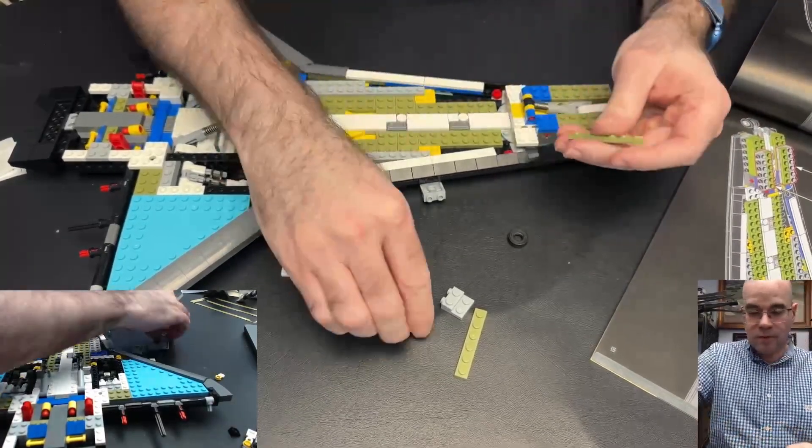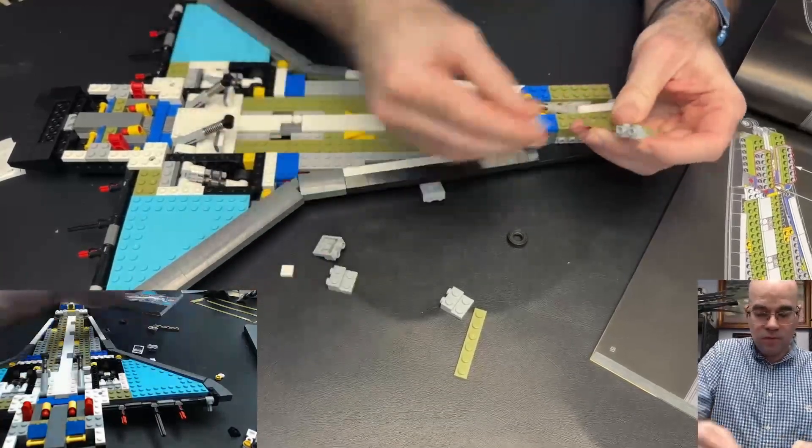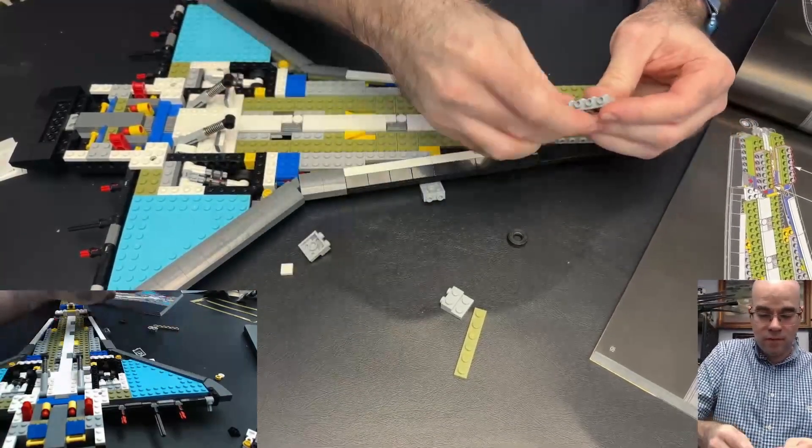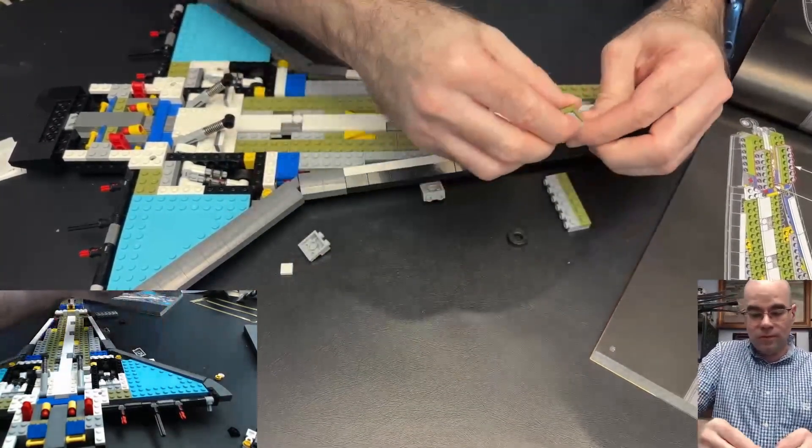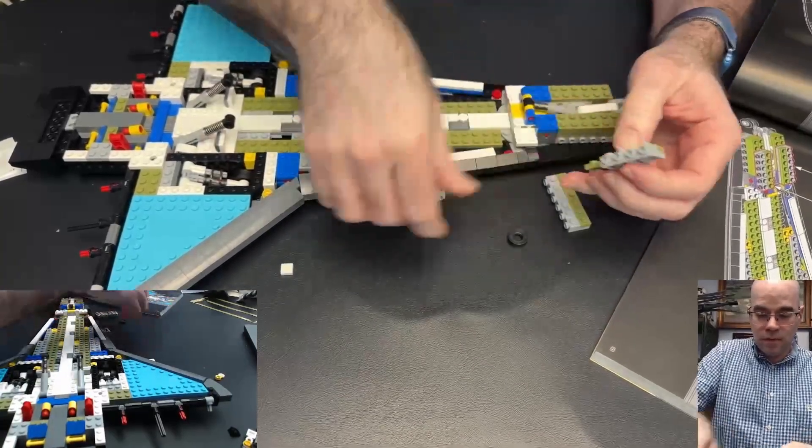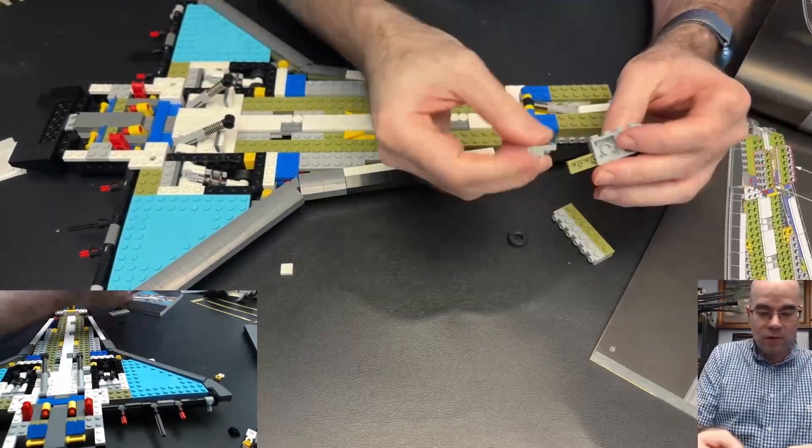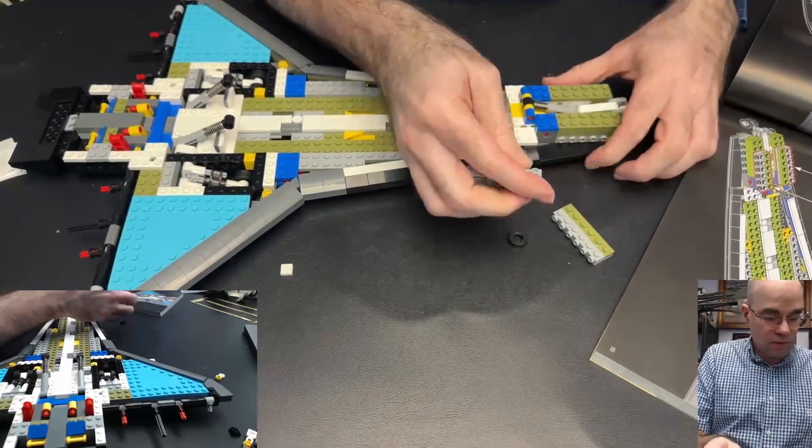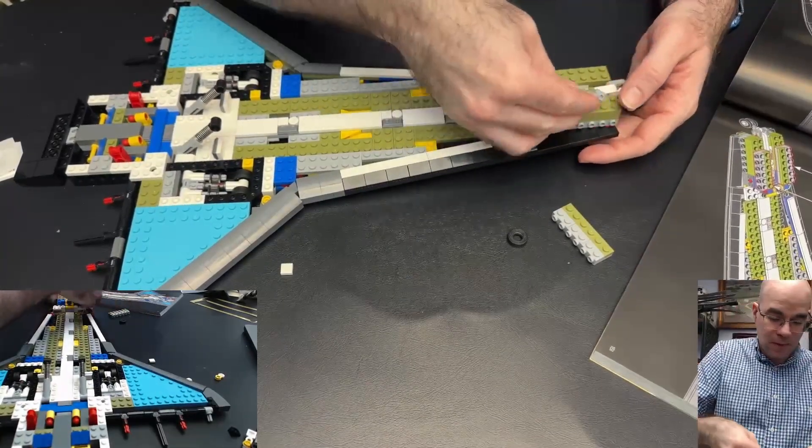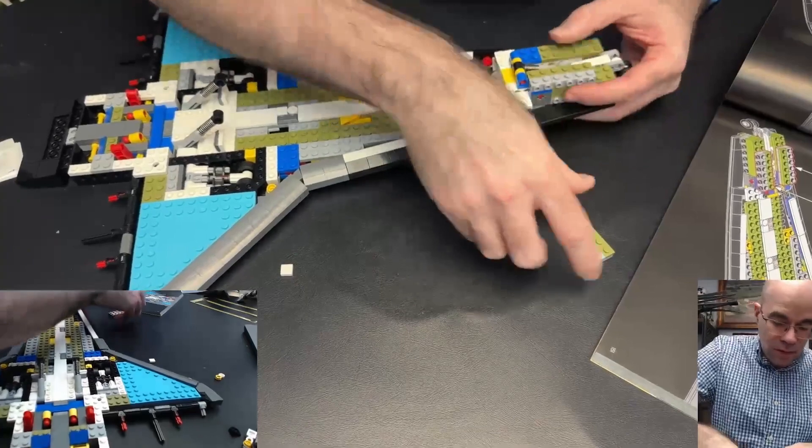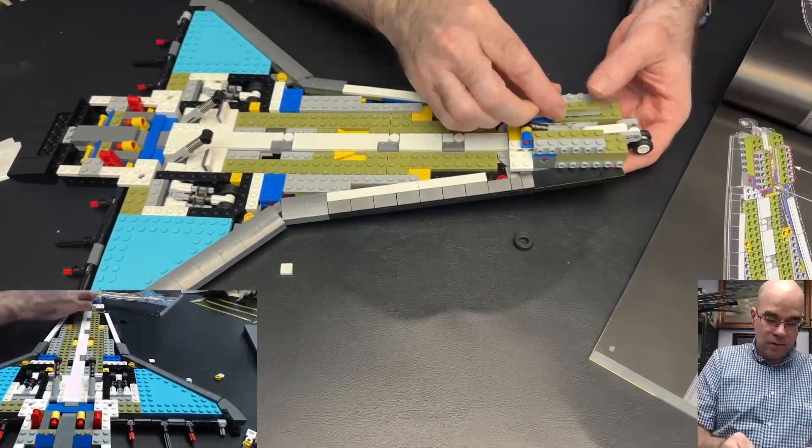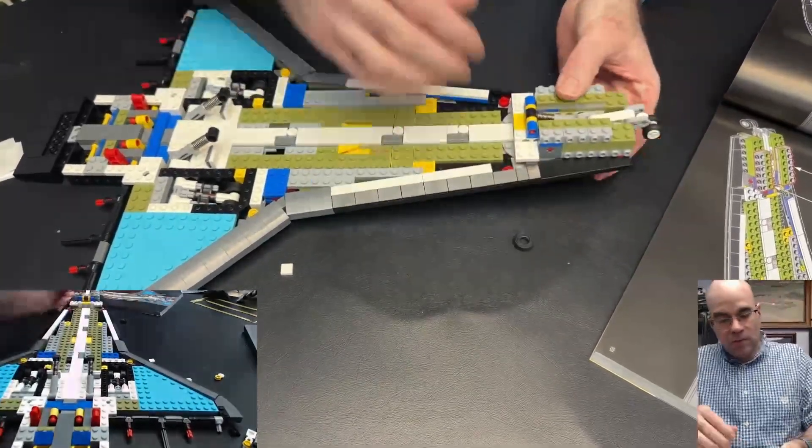Now I take two of these with the olive plate and these SNOT bricks, or half bricks or whatever they want to be. And those go on top here. Hold that down.